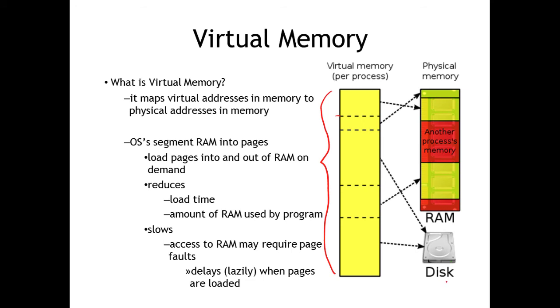The memory mapper maintains that relationship — taking those virtual address spaces and mapping them to the physical. When a process needs to access memory, it consults a page table, and that page table tells it which physical addresses to use. That page table is part of what helps provide that bridge.